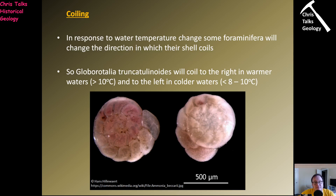Then we have coiling — coiling will change depending on the water temperature. Another species of Globigerinalia will do exactly that: depending on the water temperature, it will coil one way, and if it gets colder or hotter, it will coil the other way. If the water temperature is warmer, it will coil to the right — essentially telling us the water temperature must be in excess of 10 degrees Celsius. If it coils to the left, it tells us the water temperature must be cooler than 8 to 10 degrees Celsius. Although not giving us firm numbers, it gives us great information.